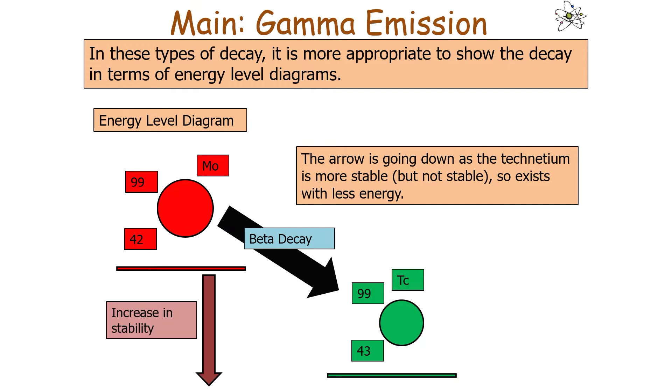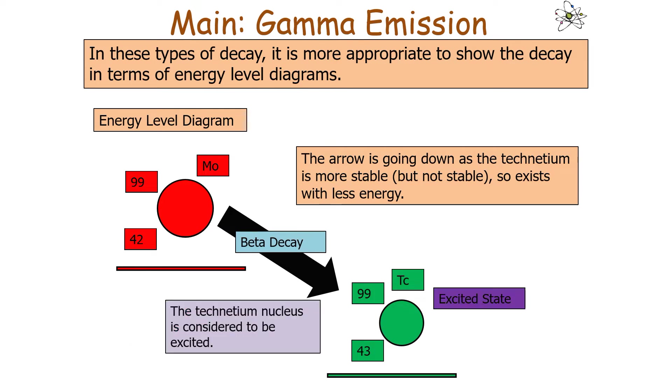We've increased our stability. It's not completely stable yet, just more stable than the starting nucleus. The technetium nucleus is considered to be excited. It has less energy than the molybdenum nucleus, yet it will have more energy than when technetium nuclei exist normally.